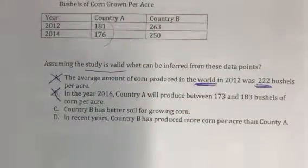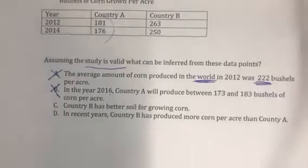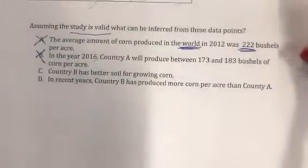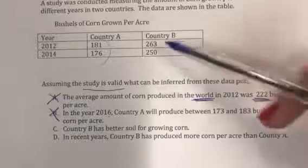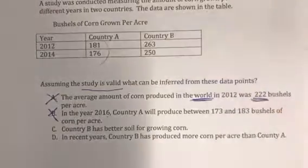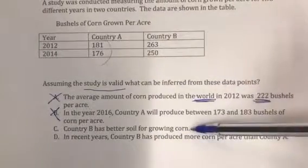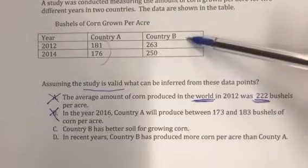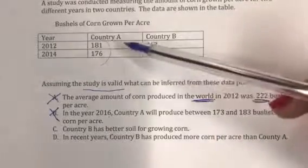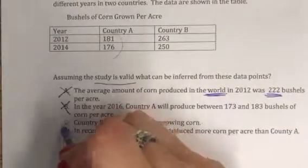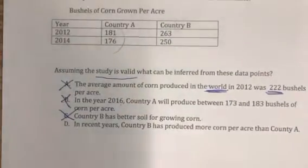We can't pick option B. Option C says Country B has better soil for growing corn. We do see that Country B has larger numbers, but we have no idea if that's based on better soil. Maybe Country B is huge and Country A is small. We cannot choose option C.